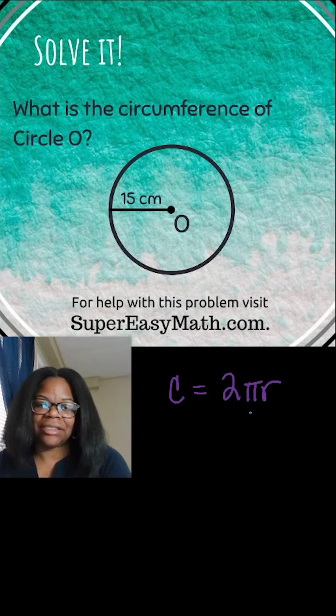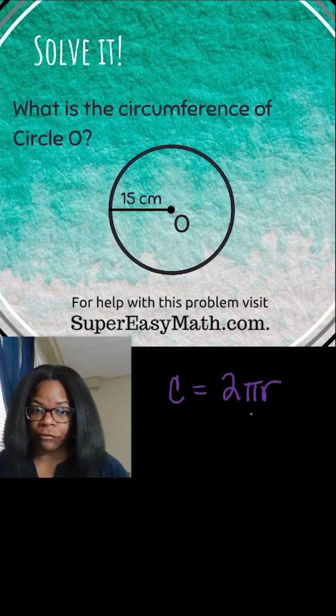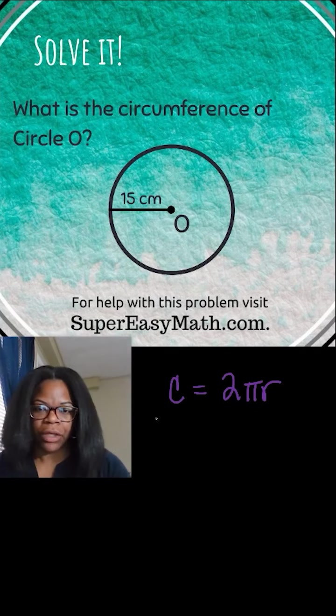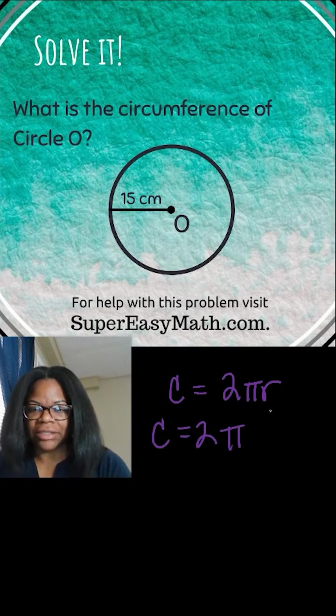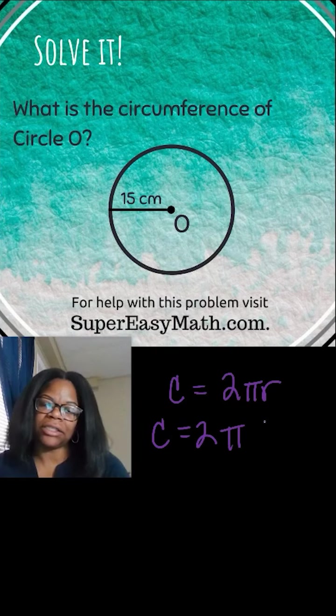In this case, I'm going to show you two different ways. We're going to solve it when we put 3.14 in for pi, and then we're going to solve it when we just leave pi as the symbol. So circumference equals 2 times pi, and then r is the thing that I need to plug in. I know that r stands for radius.